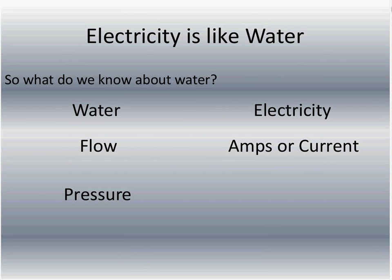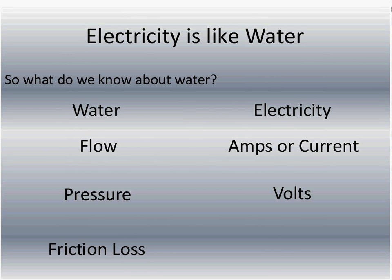Water also has pressure that it uses to move that flow. Electricity uses volts to push the current or amps through the wires. Inside the pipe, we have something called friction loss — energy that we pay for that we really don't get a whole lot of use out of. When it comes to electricity, they call that resistance. So you can see there are some similarities between electricity and water.